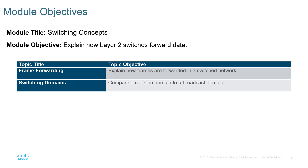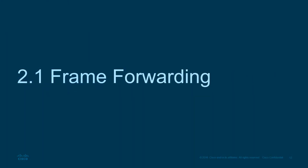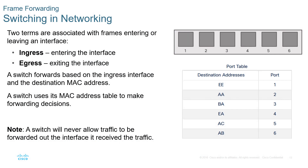Frame forwarding is how we actually forward frames when we receive them or as they leave. If a frame is being received, that's ingress. If it's leaving, that's egress. As it comes into an interface, that's ingress; leaving an interface is egress. The switch will forward based on the ingress interface — the receiving interface — and then it will look at the destination MAC address.